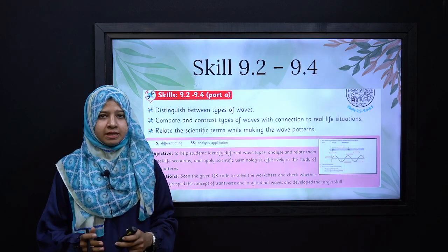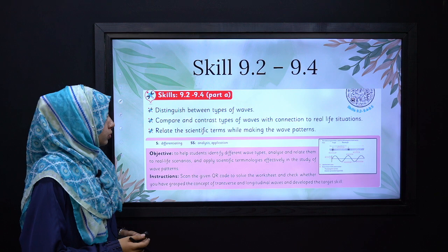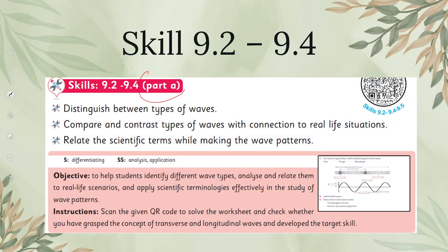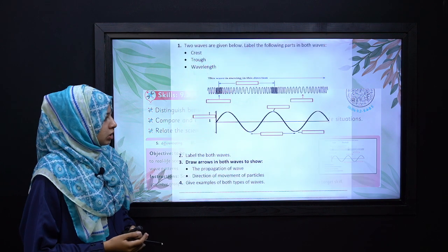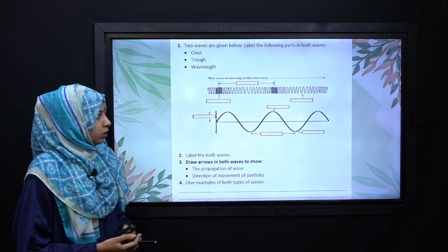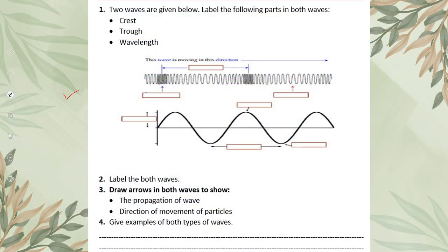So let's go to our first skill, that is 9.2 to 9.4 part A. You can easily open the skill by clicking on the link or by scanning the code that is available in your books. As soon as you click on that link or scan the code, this type of worksheet will open.